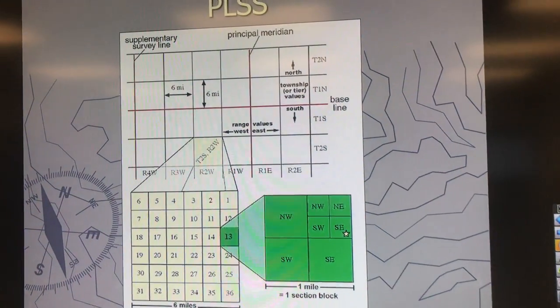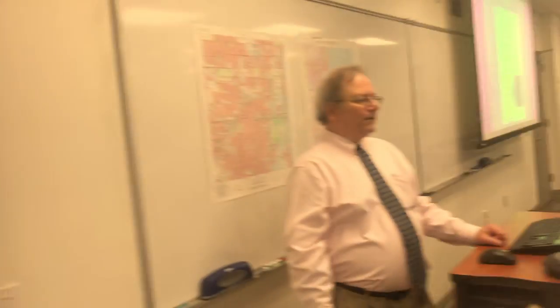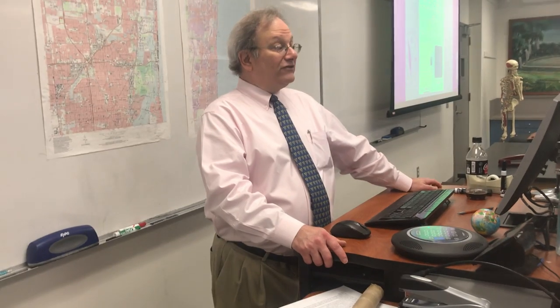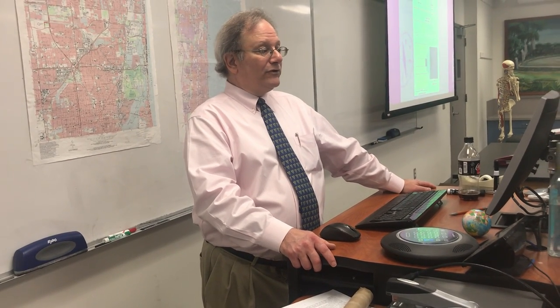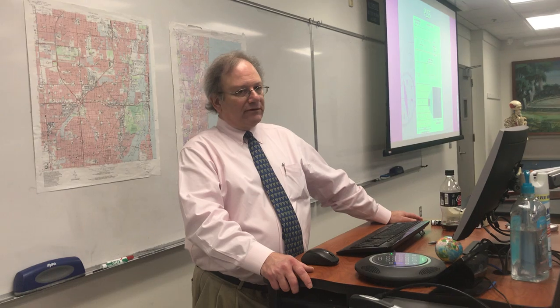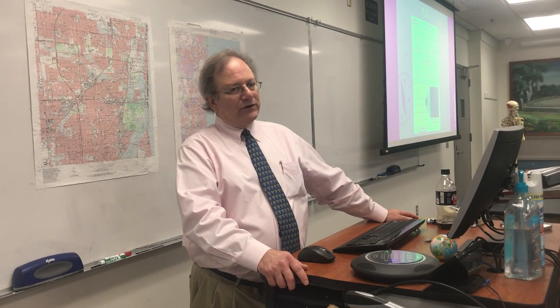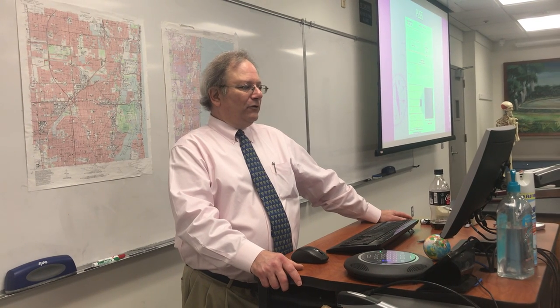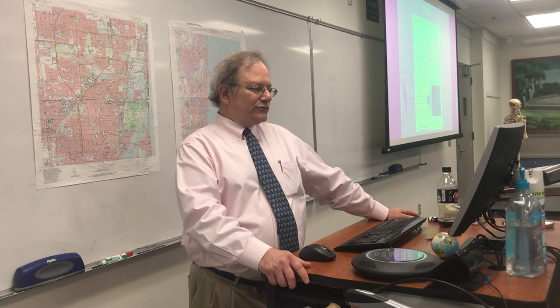If you turn to the next slide labeled PLSS, you can see a diagram. As shown, the townships run north-south — there's Township 1 North, Township 2 North, Township 1 South, Township 2 South — on either side of the east-west baseline of the survey. And then the ranges run east-west, so there's Range 1 East, Range 2 East, Range 1 West, Range 2 West, based on where you are in relation to the principal meridian of a particular survey.